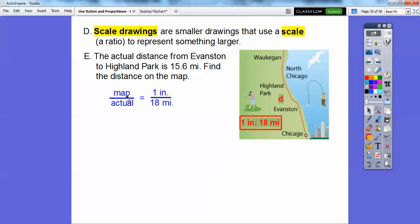So that one inch every 18 miles is going to go the map length over the actual length. So the map length is that one inch, and the actual length is 18 miles, okay? And what we're going to do is set, since we have the map's distance, we're going to set whatever distance this is. We'll call it D. So the distance from Evanston to Highland Park we'll call D, and they told us the actual distance is 15.6. Okay?